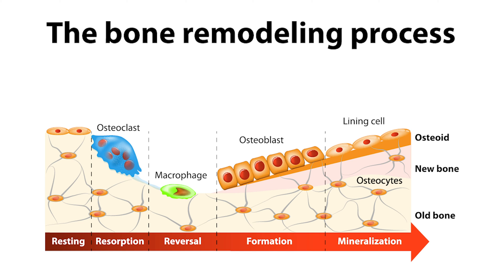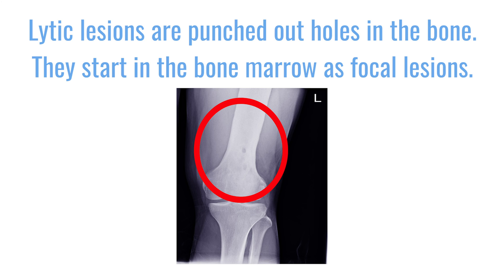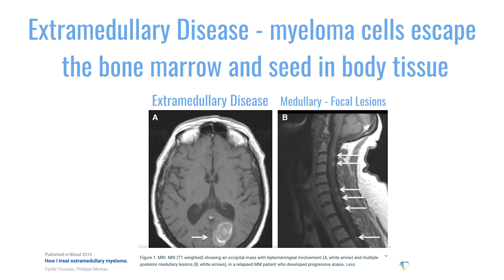As the bone gets resorbed, the bones start to weaken, and you will start actually eating into the bone — it will start to appear as a punched-out hole in your bone. We call those lytic lesions. But they have to start from inside the bone marrow and then move their way out. That's different from extramedullary disease, where myeloma cells learn how to escape the bone marrow and can seed in any other tissue, not coming out of the bone marrow or bone per se.